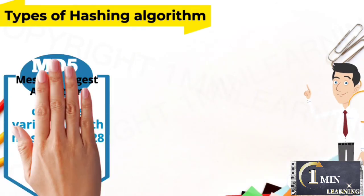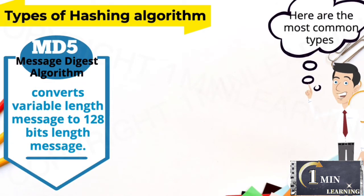There are many types of hashing algorithms. Here are the most common types. MD5, message digest algorithm, converts variable length messages to 128 bits length messages.